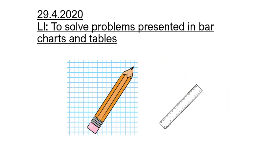Welcome to today's maths, Year Four. The learning intention is to solve problems presented in bar charts and tables. You'll need a pencil, paper and a ruler. Pause here, gather the resources and neatly write down your date and learning intention.